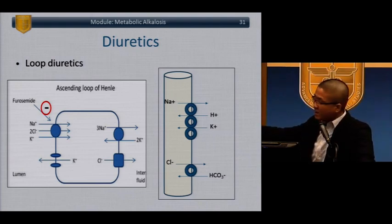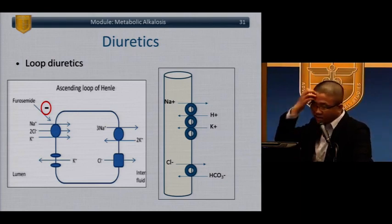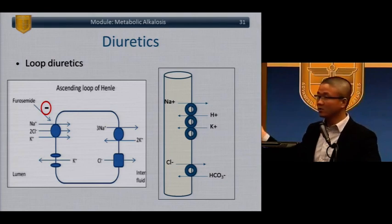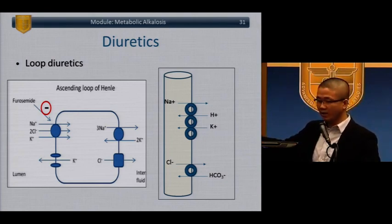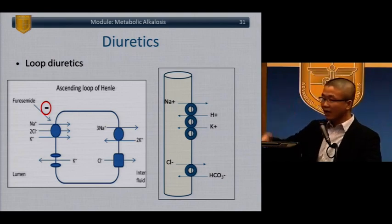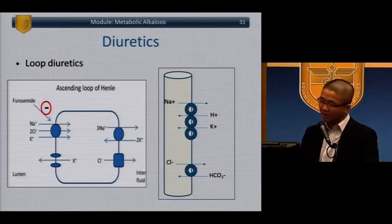Lasix — furosemide — is a sodium-chloride-potassium channel blocker. When that pump stops working, you lose sodium and potassium immediately, causing hypokalemia. Then later, bicarb is reabsorbed because a lot of sodium is going out, and to maintain electrical neutrality, bicarb is brought back into the lumen.